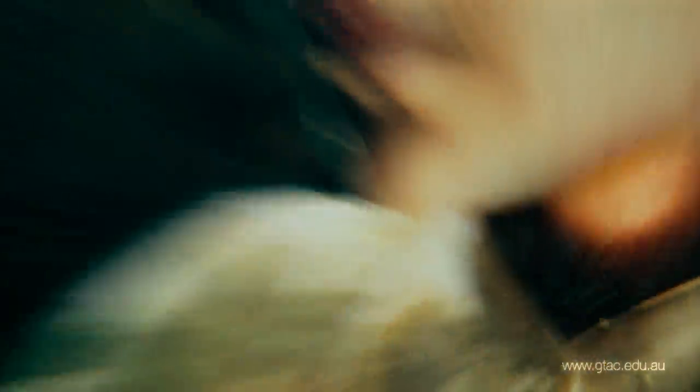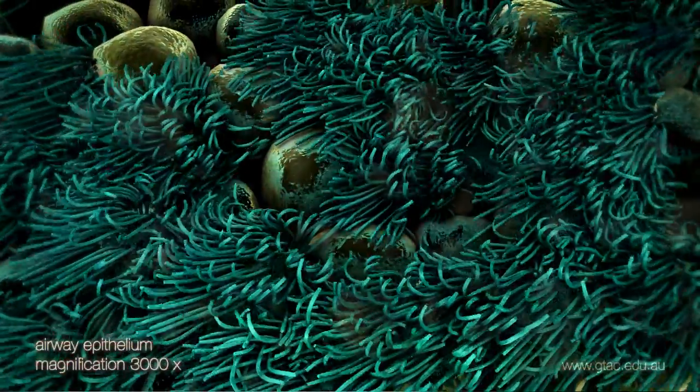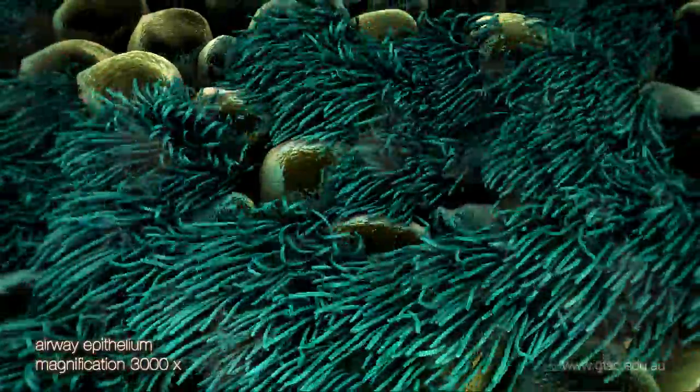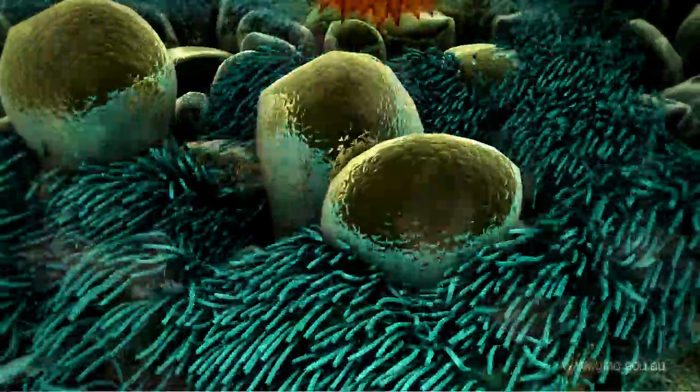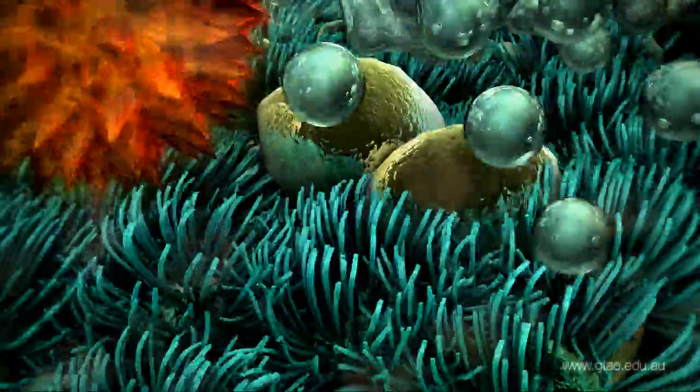The bacteria infect the airways and damage epithelial cells. Some epithelial cells have brush-like cilia that beat in a coordinated fashion. Other epithelial cells, called goblet cells, produce mucus.